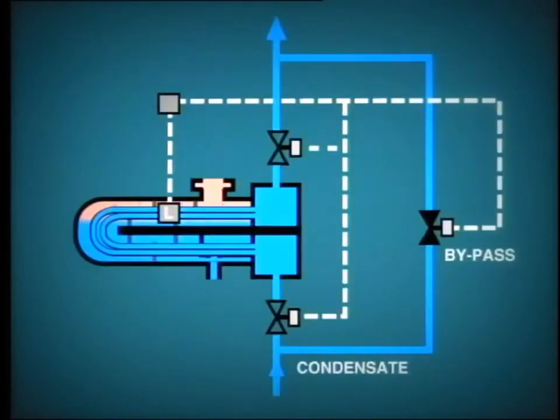In some installations, the high water level causes the condensate to bypass the heater altogether by automatically operating the motor actuated isolating valves in the following sequence. Open bypass valve and then close inlet and outlet valves.